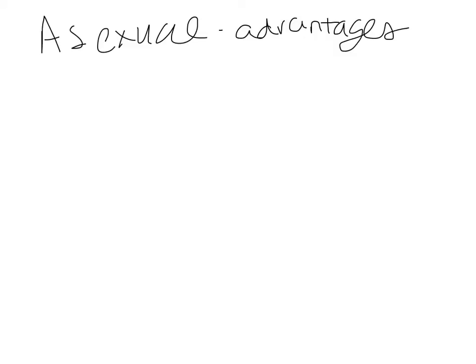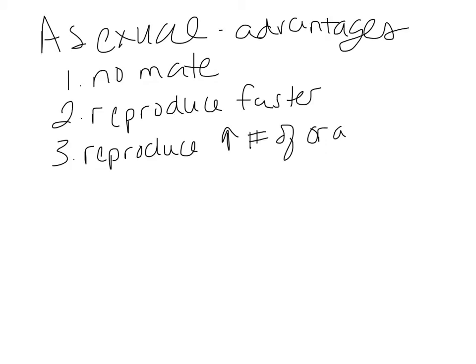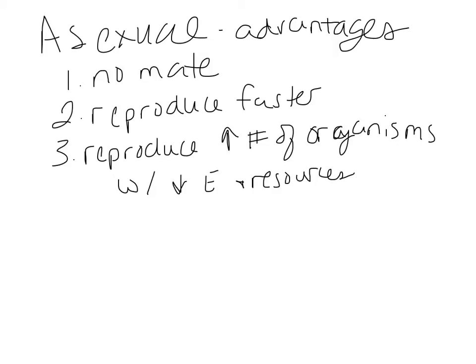Asexual reproduction has a handful of advantages. First of all, you don't have to find a mate — there's only one organism involved. Second of all, it's significantly faster, so organisms that do asexual reproduction reproduce faster than other organisms. They also usually can reproduce a larger number of organisms with fewer resources and energy. It's happening much faster and requires less energy than sexual reproduction.